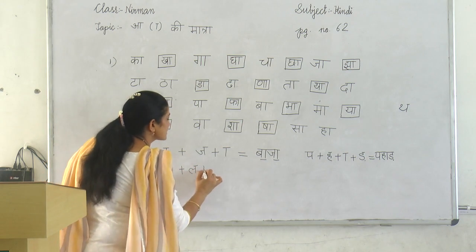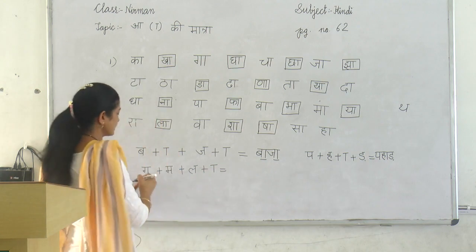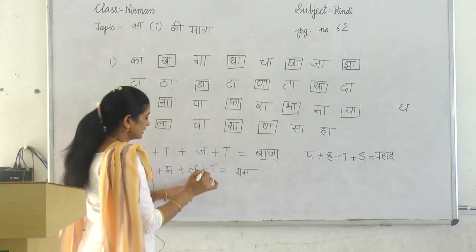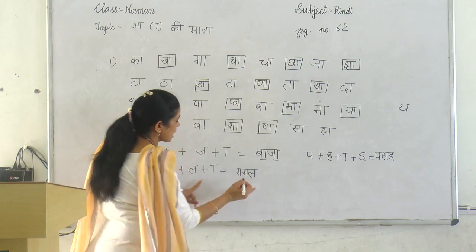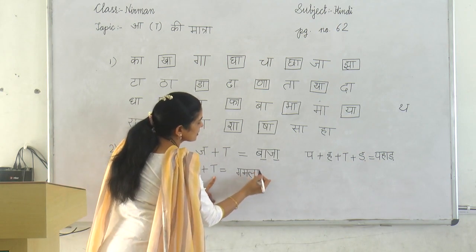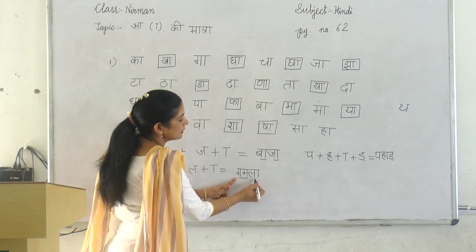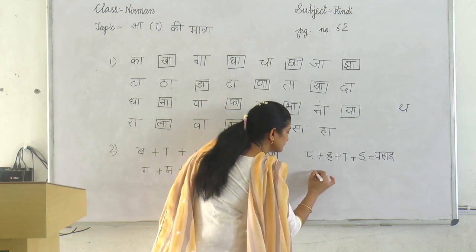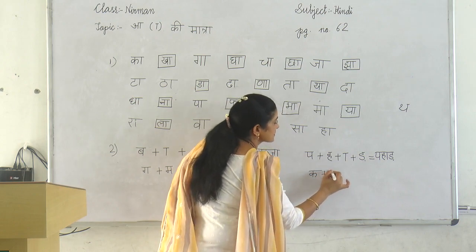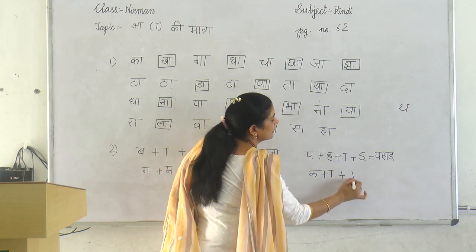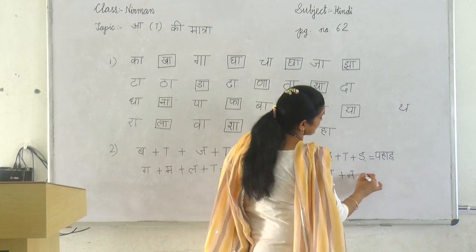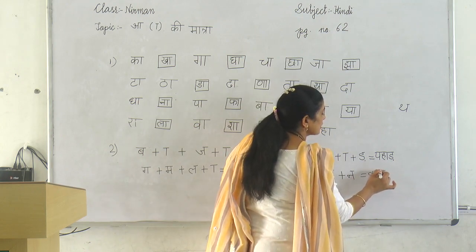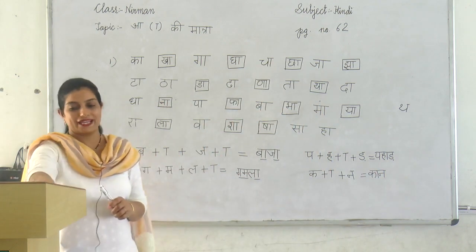Next is go plus ma plus la plus A ki matra. Read this: first write go, then write ma, then lo, and last is A ki matra. Read this: go, ma — gam, lo, la — gamla. Gamla. Then ka plus A ki matra plus na. Write ka, na — kaan. Third question on this page.